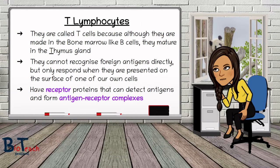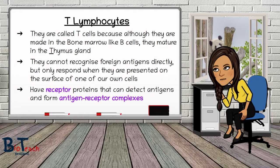T-lymphocytes are made in the bone marrow but they're called T-cells because they mature in the thymus gland. They carry out a specific immune response mainly because they can't recognise foreign antigens directly — they only respond when antigens are presented on one of our own cells. They rely on receptors on the surface of cells which can detect antigens and bind to form antigen-receptor complexes.